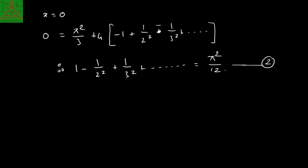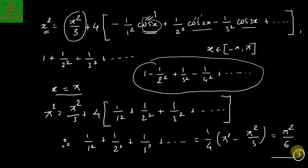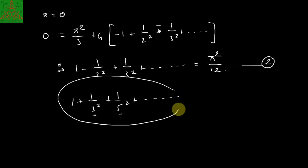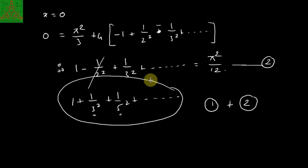For the third identity — 1 + 1/3² + 1/5² + … = π²/8 — we add the first equation (Σ 1/n² = π²/6) and the second equation (alternating series = π²/12). Adding them cancels the even terms (the 1/2², 1/4², … terms), leaving only the odd terms: 2(1 + 1/3² + 1/5² + …) = π²/6 + π²/12 = π²/4, giving 1 + 1/3² + 1/5² + … = π²/8. That's it for this video — please like, comment, and see you next time!